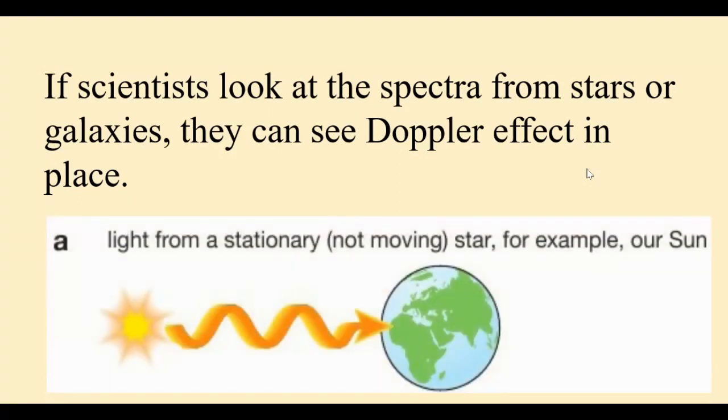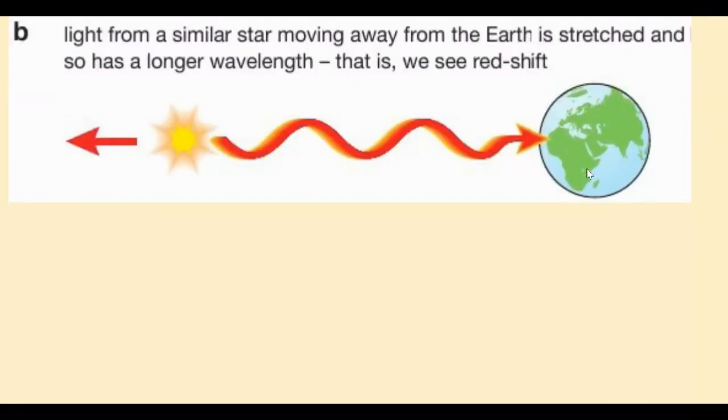For example, this image shows light from a stationary star like our Sun. Comparing this with a star that is moving away from the Earth, the light appears to be stretched and so it has a longer wavelength, meaning that the frequency is smaller according to the wave equation. This is what we call the redshift.